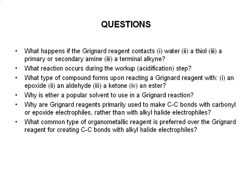Why is ether typically used in Grignard reactions? Grignard reagents are great ways to make carbon-carbon bonds, but mainly to carbonyl or epoxide electrophiles rather than with alkyl halide electrophiles — why is that? What products occur if you react a Grignard reagent with an alkyl halide, and what type of other common organometallic reagent is preferred over the Grignard in order to create a carbon-carbon bond using an alkyl halide electrophile?